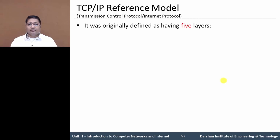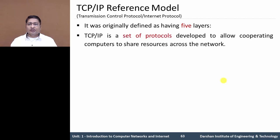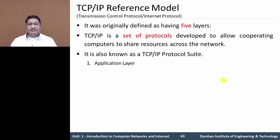In this model, it has 5 layers and each layer contains a protocol. The set of protocols is developed to allow cooperating computers to share different resources across the network. We can also say that the TCP/IP reference model has a TCP/IP protocol suite. Let's see the different 5 layers.